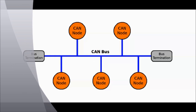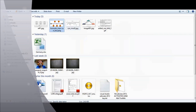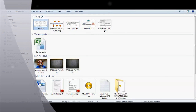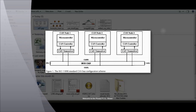There is a concept to decide who can transmit and who can receive, and that is called arbitration. Before any node tries to transmit, it has to win the arbitration first, and then it can proceed with further transmission.